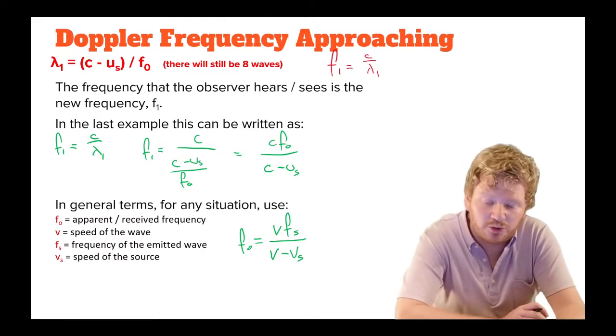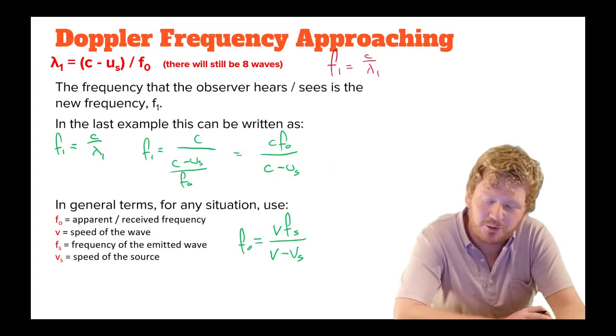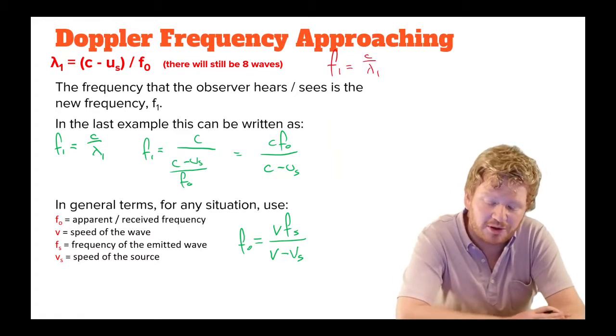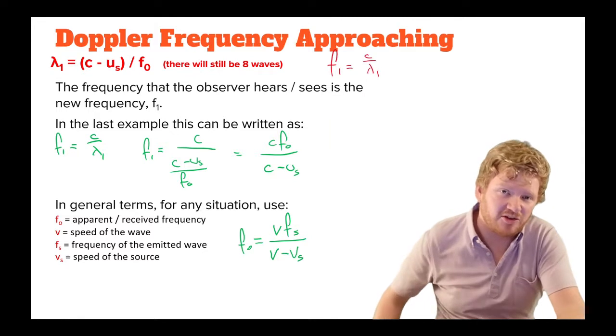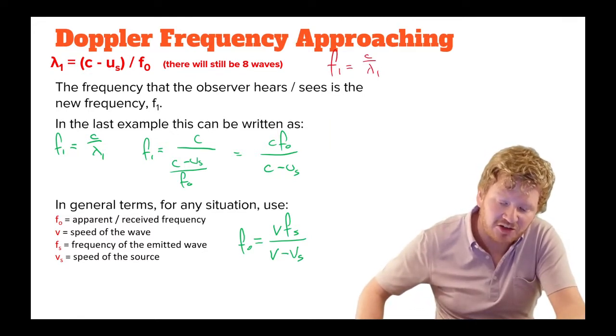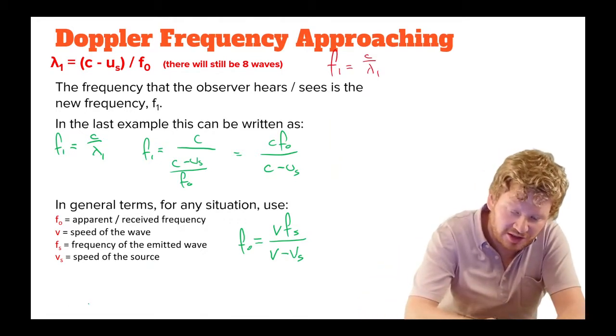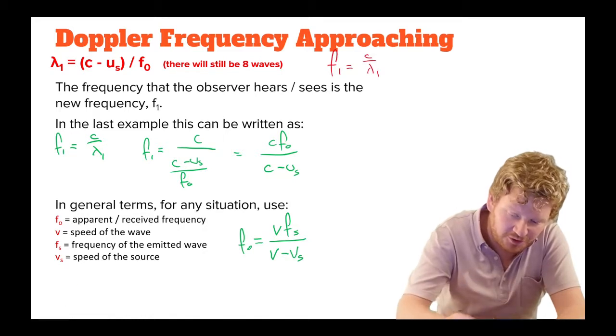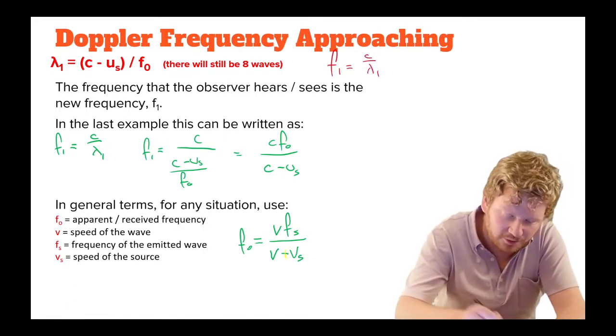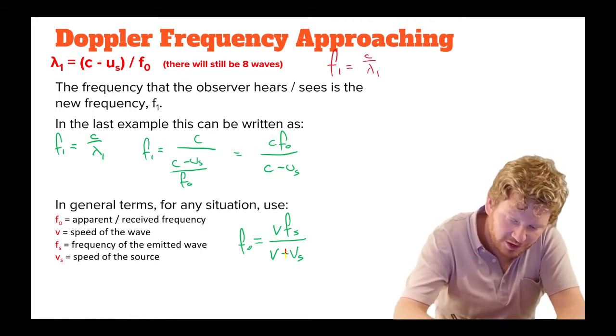That's for when you're moving towards an object. What about when you're moving away? Well, I'm not going to go through the whole example, but hopefully you can see that, and maybe you can try this for yourself. When you're moving away, it's almost identical, except that it becomes f0 is equal to vfs divided by v plus vs.